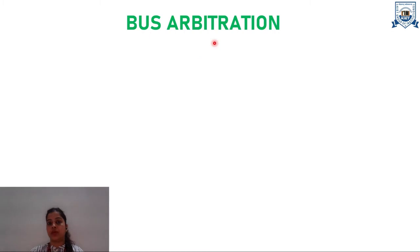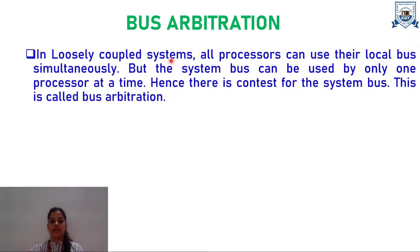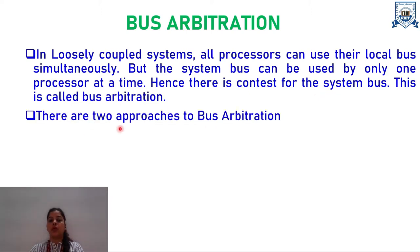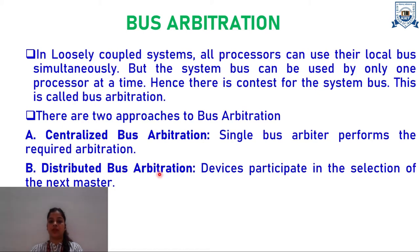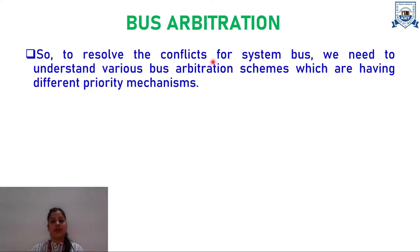Now it must be clear to you all what bus arbitration is. In loosely coupled systems, all processors can use their local bus simultaneously, but the system bus can be shared by only one processor at a time. Hence, there is a contention for the system bus, and this is called bus arbitration. We have two approaches to this concept: one is centralized bus arbitration, where we have a single bus arbitrator that performs the required arbitration; on the other hand, we have distributed bus arbitration, where devices can participate in the selection of the next master.